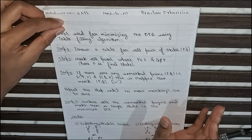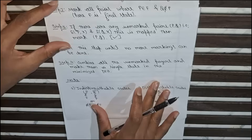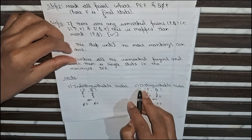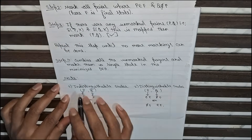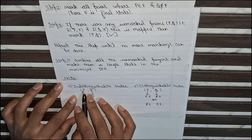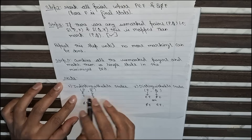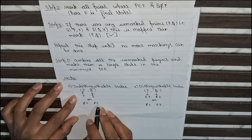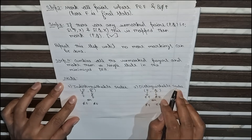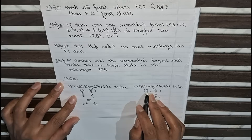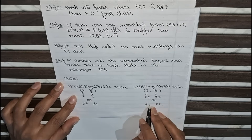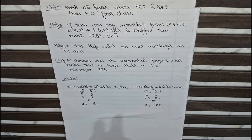Before solving this type of problem, we should know two important points: indistinguishable states and distinguishable states. Indistinguishable states are when p and q both belong to final states, or both do not belong to final states. Distinguishable states are when one of the variables p belongs to a final state and q does not, or p does not belong to a final state and q does.